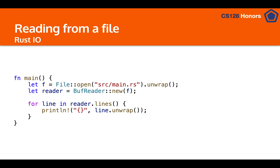We then create a `BufReader` — similar to how we flushed a buffer for printing, this reads in only a certain amount at a time, which allows us to use a `for` loop to iterate through the file. In the loop we say `for line in reader.lines()`, where `.lines()` gives us each line in sequence. We call `line.unwrap()` to get each line and print it out. You can make this more complex — read a specific line, do formatting, and much more.